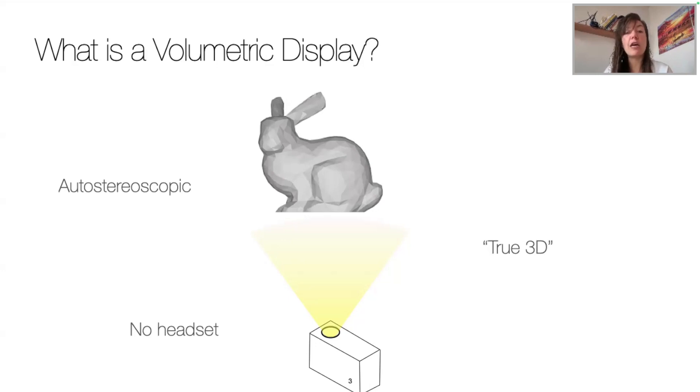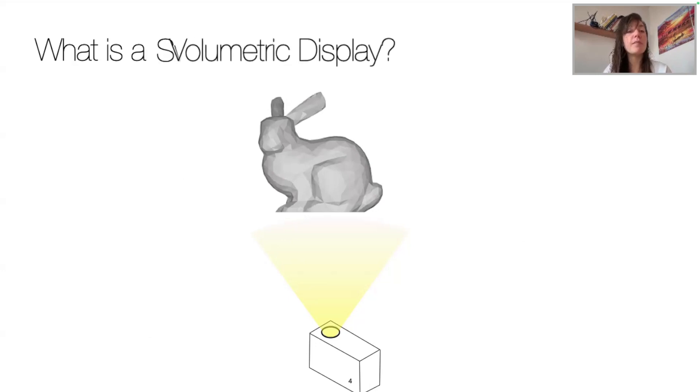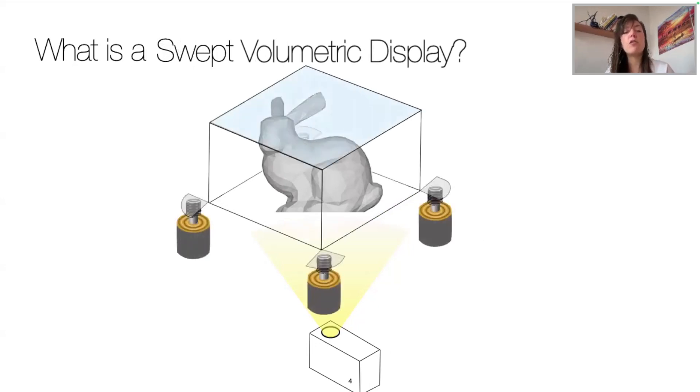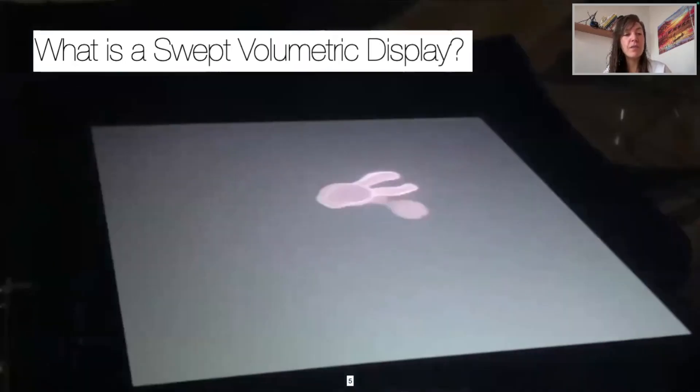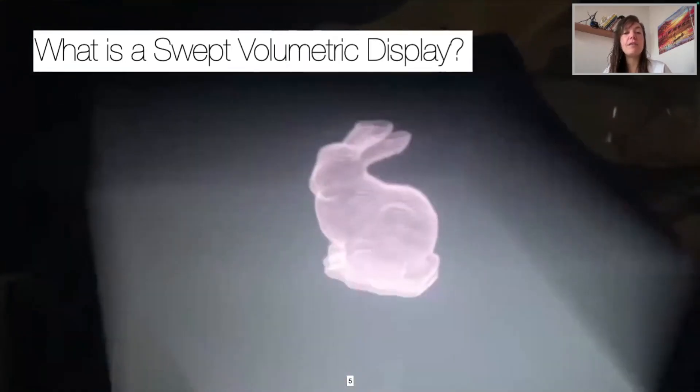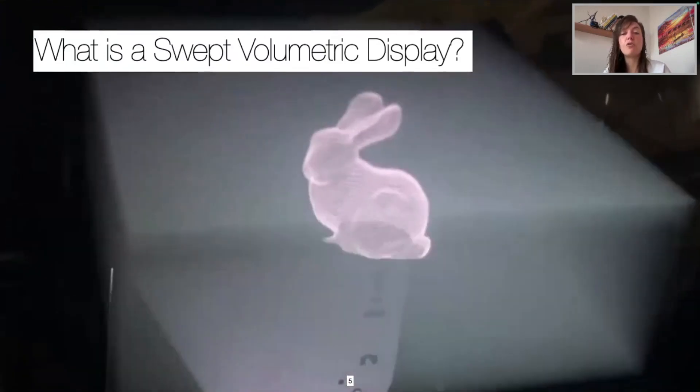But here we're going to talk about a type of volumetric displays: swept volumetric displays. Well, it contains a physical volume in which the 3D object will be perceived, but more generally it contains a diffuser on which the projection occurs, springs connected to voice coils or speakers creating an oscillation, and a projector. It then literally sweeps the diffuser really fast so that the surface is non-perceivable by leveraging the persistence of vision to make perceive an object without perceiving the diffuser. So we can see on this video that the diffuser starts moving really fast and we perceive a true 3D rabbit.